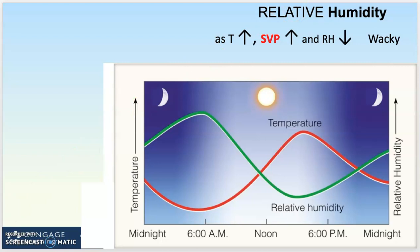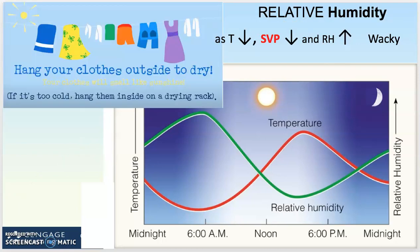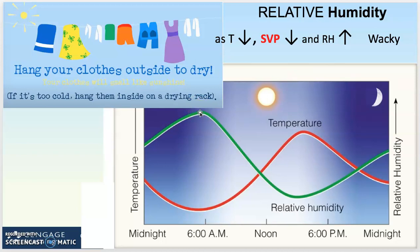This impacts your real feel because you think humidity is highest in the afternoon, but it is not. For example, hang your clothes outside to dry — but if it's too cold, hang them inside on a drying rack. The reason is that humidity is high when it's cool. The relative humidity will be so high that there's so much water vapor in the air that it won't be able to take the water vapor off your clothes and dry them.